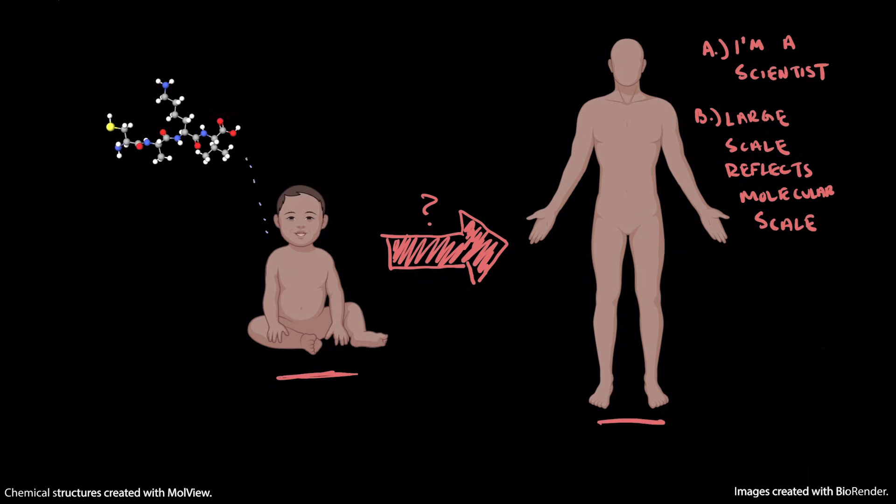And so, this means that there are some molecules in this baby, and those molecules are interacting and combining with some other source of molecules in the world in order to become this adult. And generally speaking, the source of those molecules is going to be our diet, aka our food.